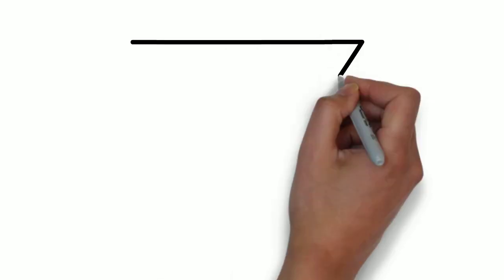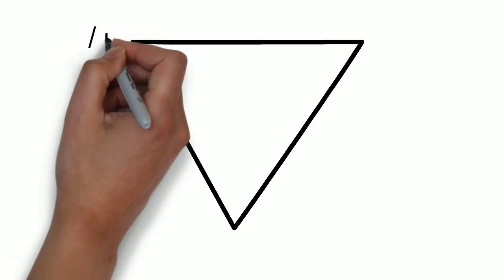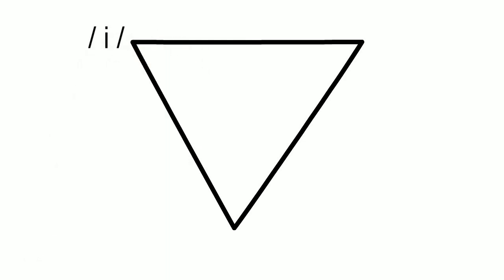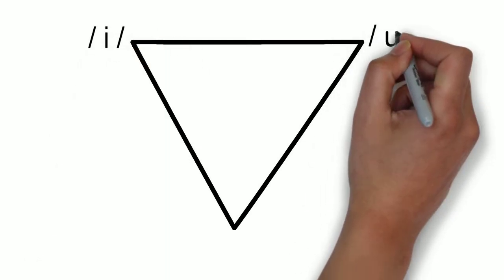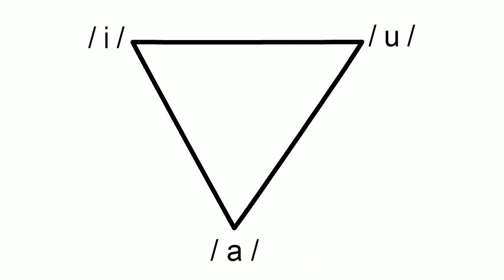Usually, three-corner vowels are used to plot the edges of a speaker's vowel space. These are typically e as in the word fleece, oo in the word goose, and ah like in the word trap.